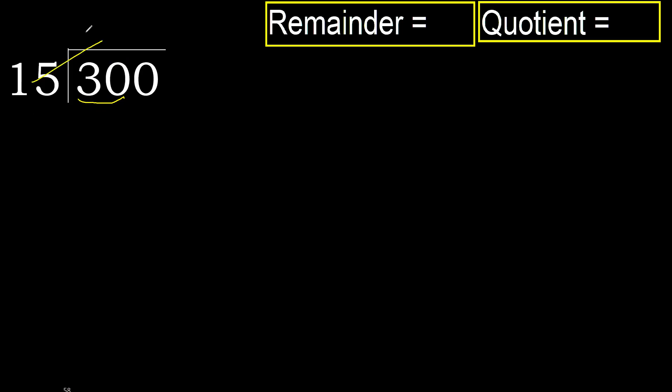15 multiplied by which number is nearest to 30, but not greater. 15 multiplied by 3 is 45, which is greater. Multiplied by 2 gives 30, which is not greater.